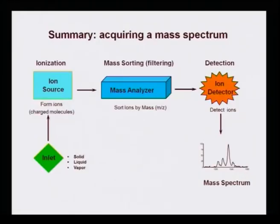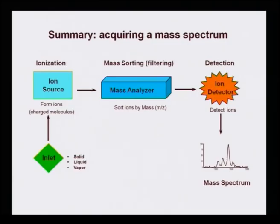To summarize the mass spectrometer workflow: there must be an inlet, which can accept vapor phase, liquid, or solid samples. Once injected, the sample goes into the ion source chamber where it is ionized using hard or soft methods. The resulting charged ions are sorted by m/z ratio in the mass analyzer and sent to the detector, where they are detected and amplified into a mass spectrum as data.